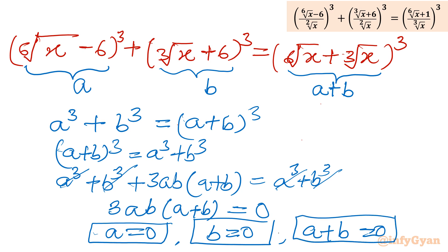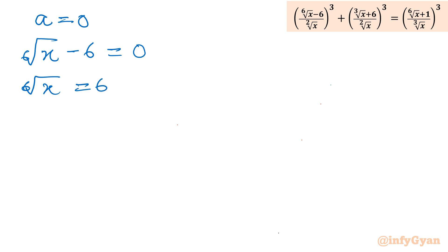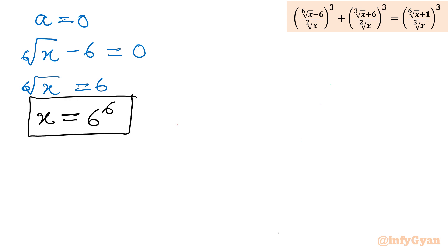Let's find the solutions. First, a = 0 means 6th root of x minus 6 = 0, so 6th root of x = 6. Raising both sides to the power 6, we get x = 6⁶. This is one valid solution — we will verify it shortly.